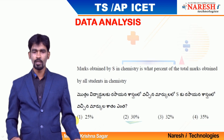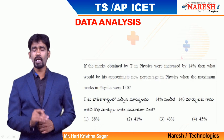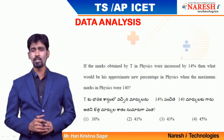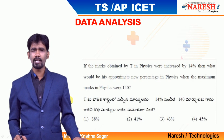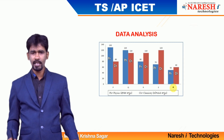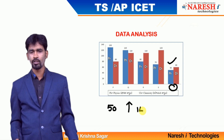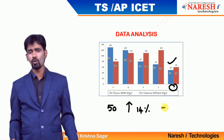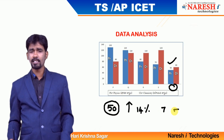Mark your answer as 25%. Now, Question 2: If the total marks obtained by T in physics was increased by 14%, what is the new score? Looking at the graph, T's physics score is 50. 14% of 50 is 7. So if marks are increased by 14%, the new score becomes 57.